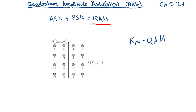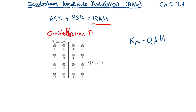In QAM we modulate both the amplitude and the phase of the carrier. Below is a diagram of all possible phasor states and an assignment of symbols. This representation is called the constellation diagram, and it depicts all possible constellations of phasor values.